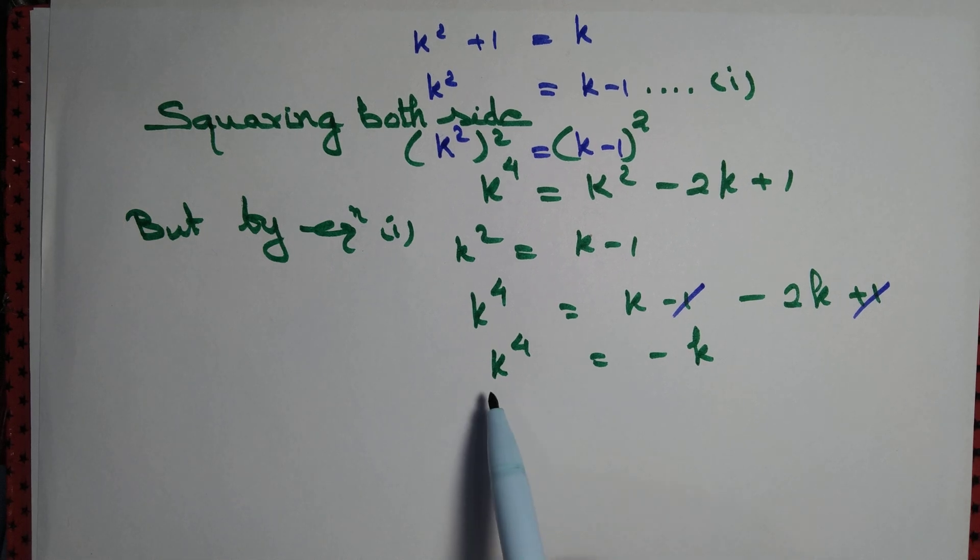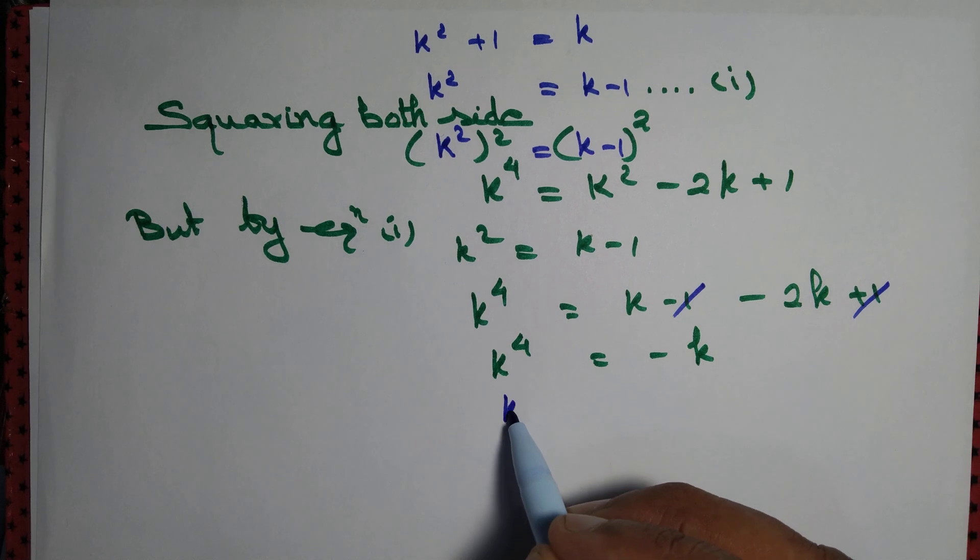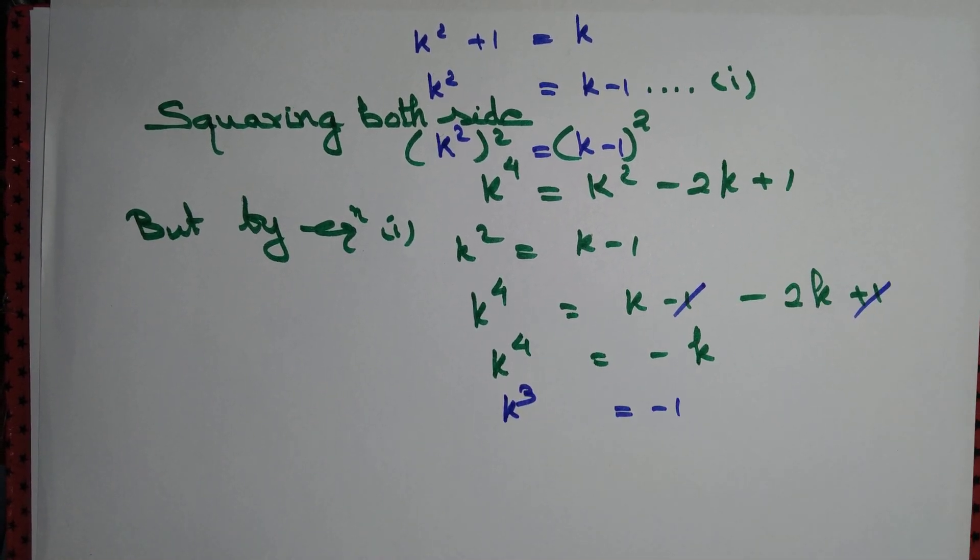Since k cannot be 0, we cancel it out to obtain k³ equal to minus 1. So simple.